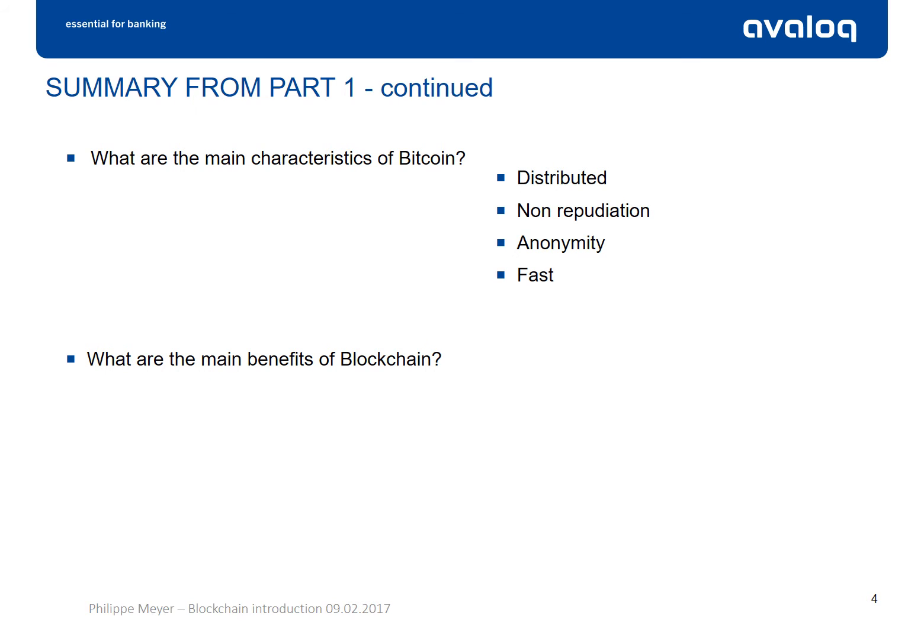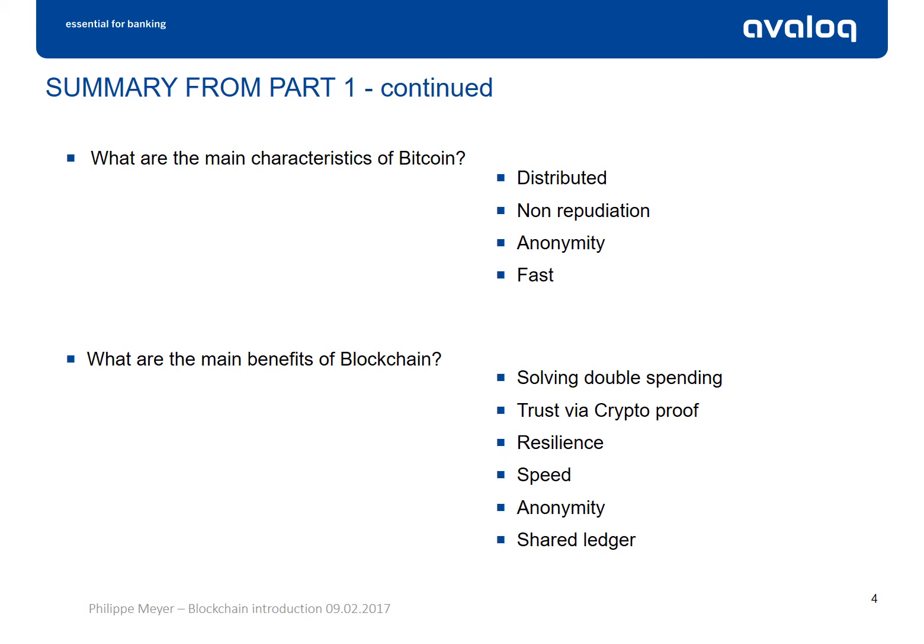What are the main benefits of a blockchain network? A blockchain network solves the double-spending problem. It enables trust via crypto-proof. It is resilient. It is fast. It is anonymous. And it is a shared ledger where all the participants can see the same transactions.